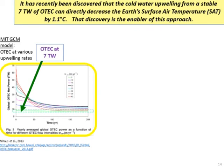Here's where I get involved. It has recently been discovered that the cold water upwelling from a stable seven terawatts of OTEC can directly decrease the Earth's surface air temperature by 1.1°C. That discovery is the enabler of this approach.